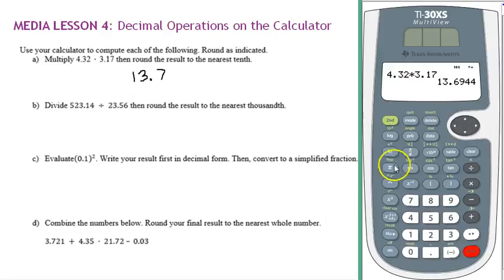Let's look at the next one. Divide 523.14 divided by 23.56. There's our result. We're asked to round to the nearest thousandth. That's one, two, three decimal places. Notice this is five, so we are going to round up. This is going to be rounded up to a five in the thousandth place, so 22.205.